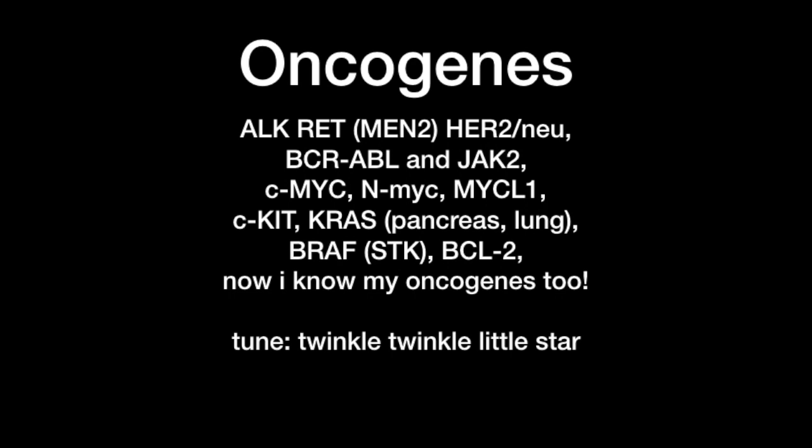Let me explain some of the things that you can get from this song. The first line of genes — ALK, RET, and HER2-NU — can be used to memorize all of the receptor tyrosine kinases. This is important to distinguish from the regular tyrosine kinases, the non-receptors, that are in the second line: BCR-ABL and JAK2.